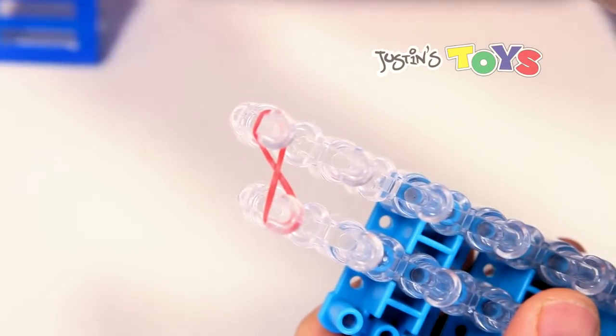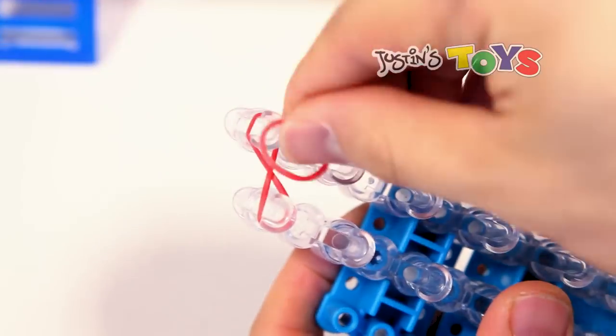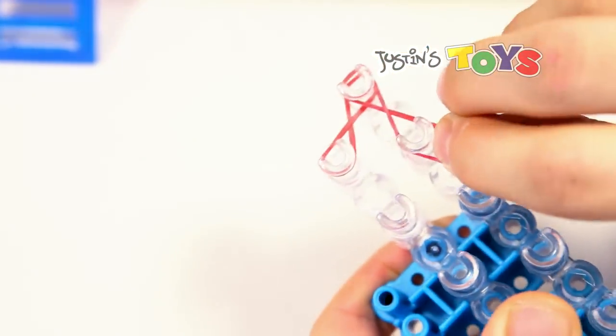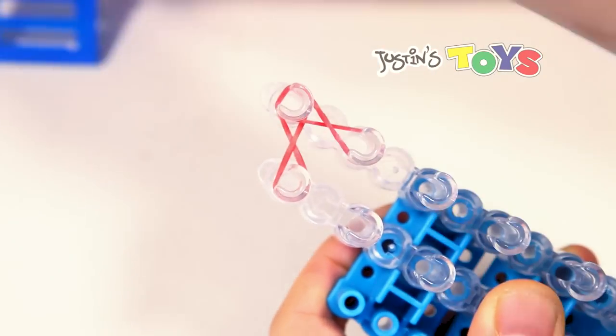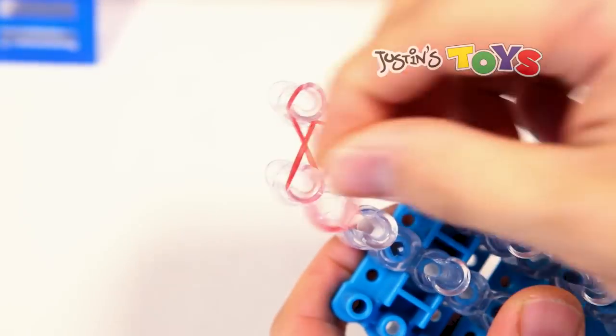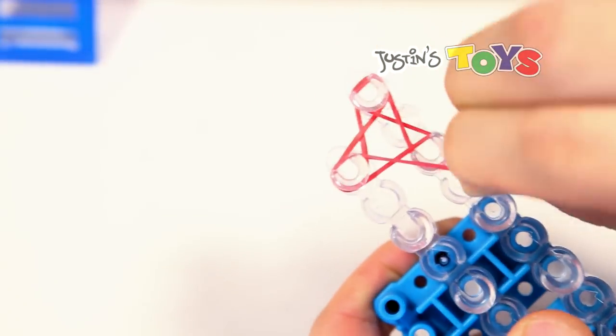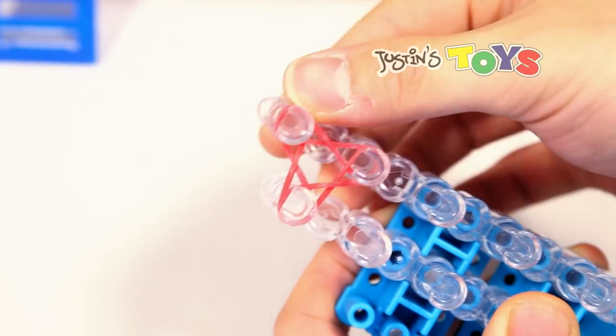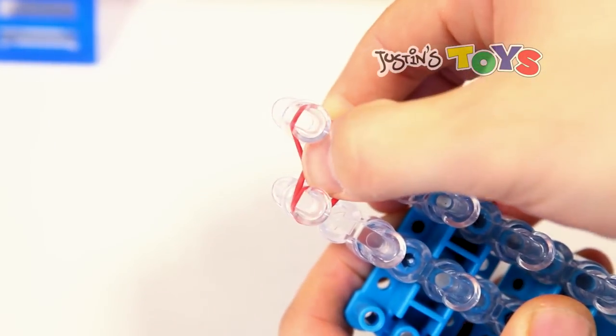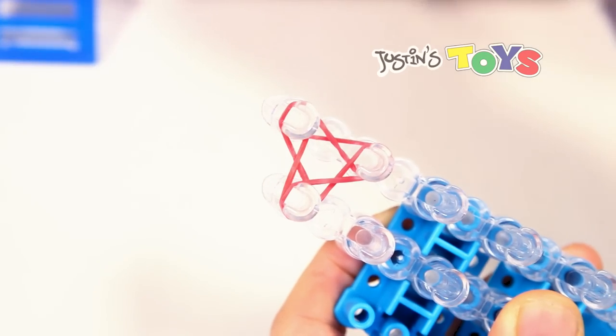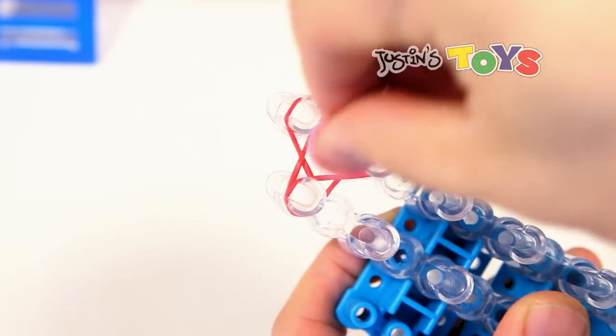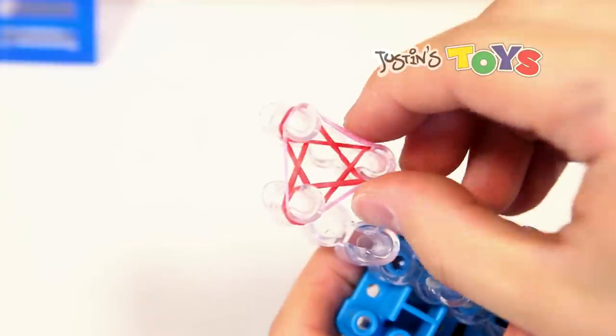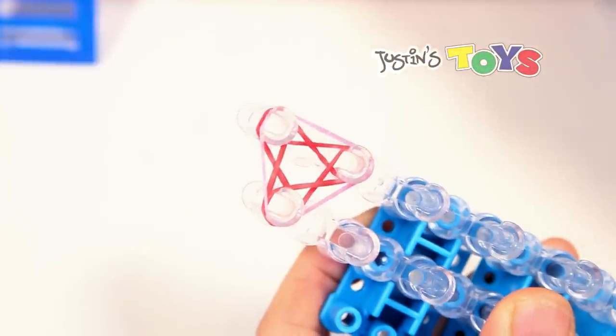Then you're going to connect the next two pegs with another figure-eight. Alright, now once you have that done, you're going to pick your next two colors, and put them on top, like a triangle, around all three pegs.